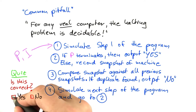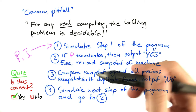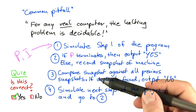And the answer here is that yes, this algorithm is actually correct. It might not be very practical in terms of running time, but the arguments are perfectly fine. If you have finite memory and a program is in an infinite loop, then at a certain point in time, snapshots or states of the machine must repeat themselves. There's no other way.